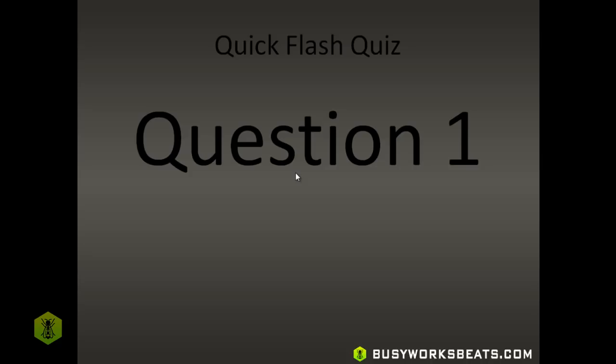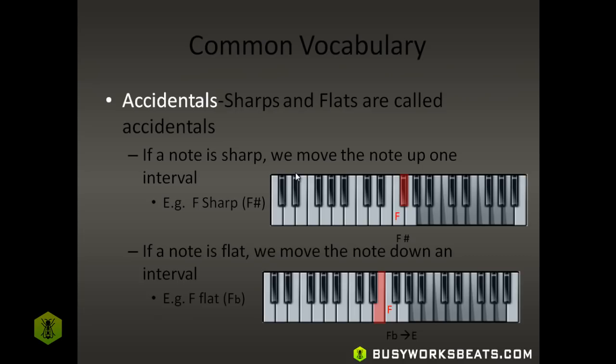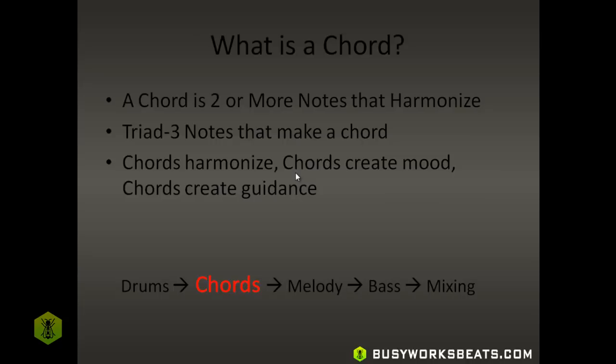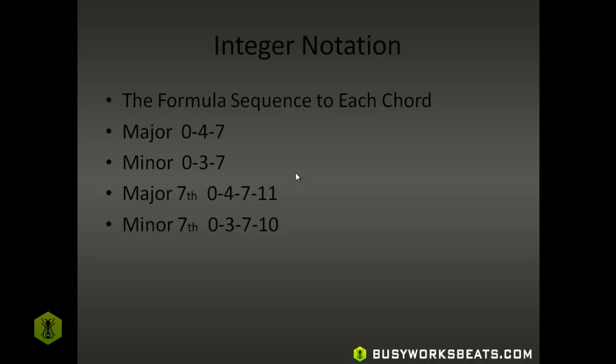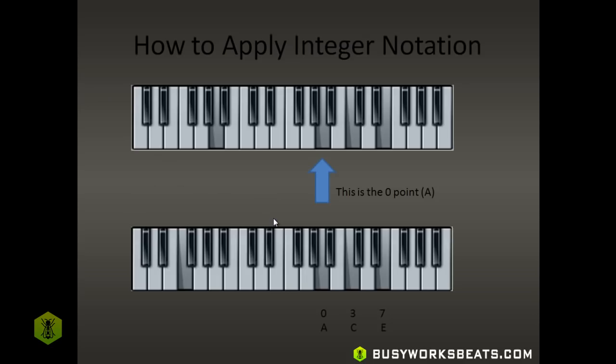Here's a quick flash quiz to help you understand integer notation. Quick cheat sheet review: major is 0, 4, 7; minor is 0, 3, 7; major seventh is 0, 4, 7, 11; minor seventh is 0, 3, 7, 10. Diminished is 0, 3, 6; augmented is 0, 4, 8; dominant is 0, 4, 7, 10. Remember: all we're doing is lowering every other number down one from the major formulas to get the minor formulas.